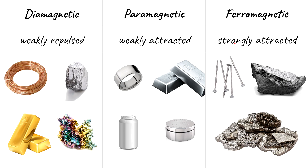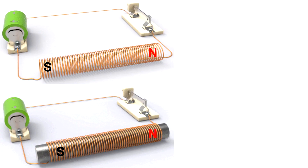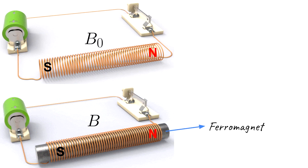Pay attention to this demonstration. We have a solenoid here. When the solenoid is wound around a vacuum, it has a magnetic field of B₀. When the solenoid has a core, its magnetic field strength changes — let's call it B. From previous lessons, you know that if a solenoid is wound around an iron core, the magnetic field strength increases dramatically.